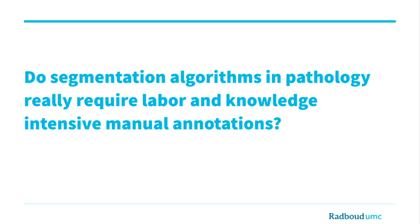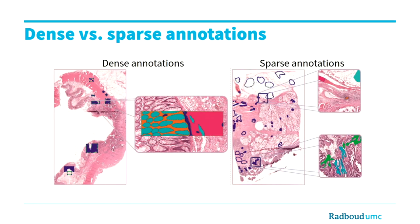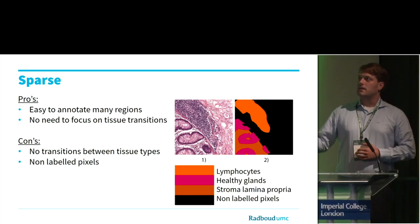The first annotation type is dense annotations, where in a predefined region of interest all pixels are annotated. The second type allows us to cherry-pick annotations throughout the entire whole slide image. This means we can easily annotate many regions because there is no need to focus on tissue transitions. However, it also means we don't necessarily have tissue transitions in our dataset.